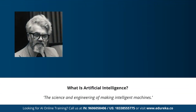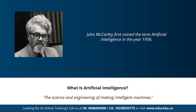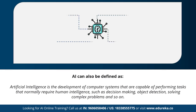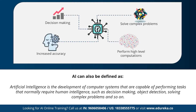The term artificial intelligence was first coined by John McCarthy, who defined AI as the science and engineering of making intelligent machines. In other words, artificial intelligence can be defined as the development of computer systems capable of performing tasks that require human intelligence — such as decision making, object detection, and solving complex problems. AI also performs high-level computations and increases the accuracy of predictions.